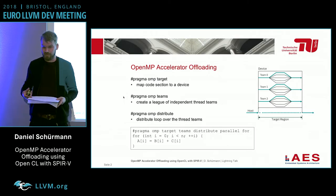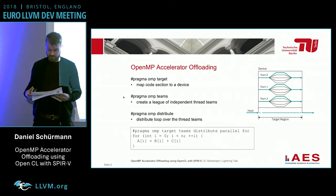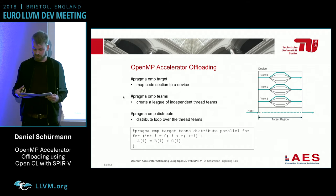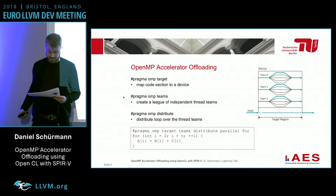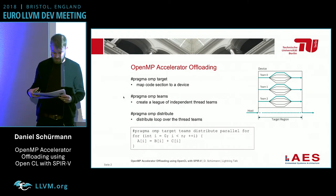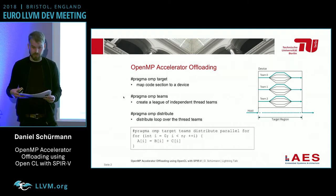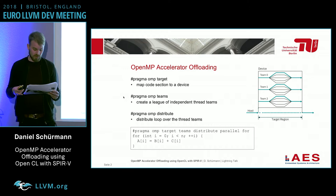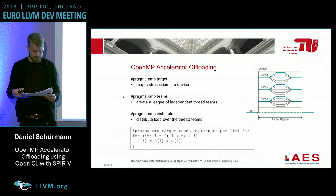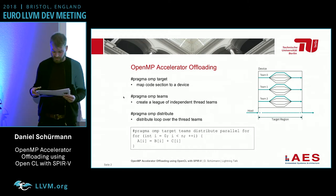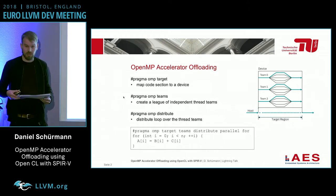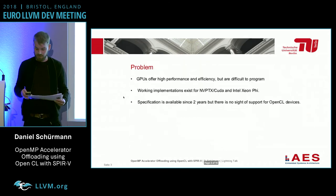With version 4, OpenMP introduced new directives to offload code execution to an accelerator, and also to create multiple teams of threads on the device and to distribute loops among the thread teams. These programs can also be combined with the already known parallel for.